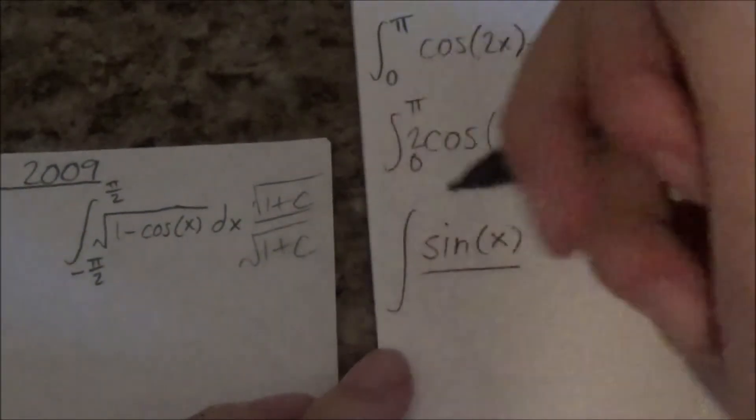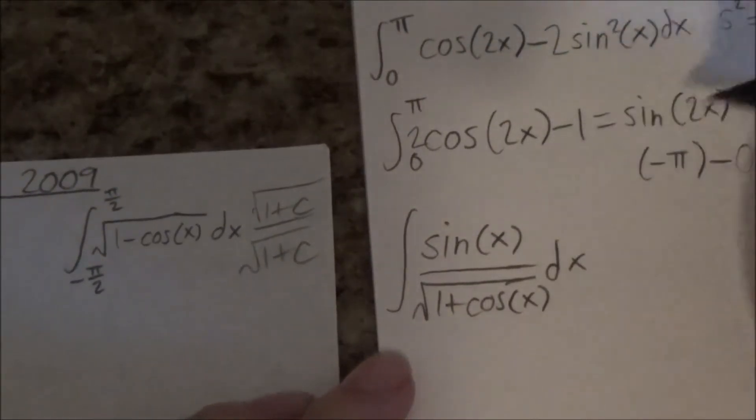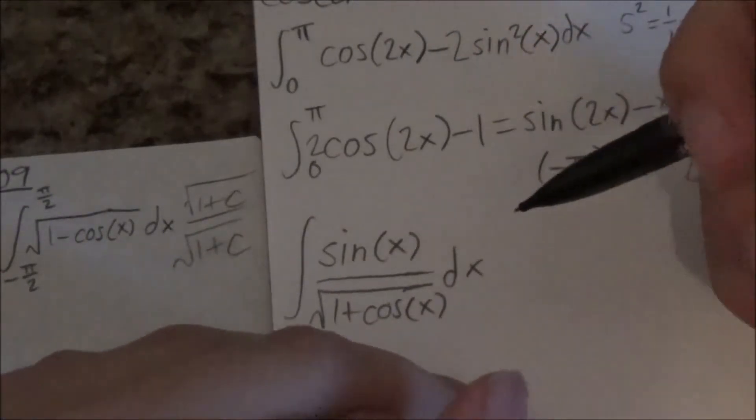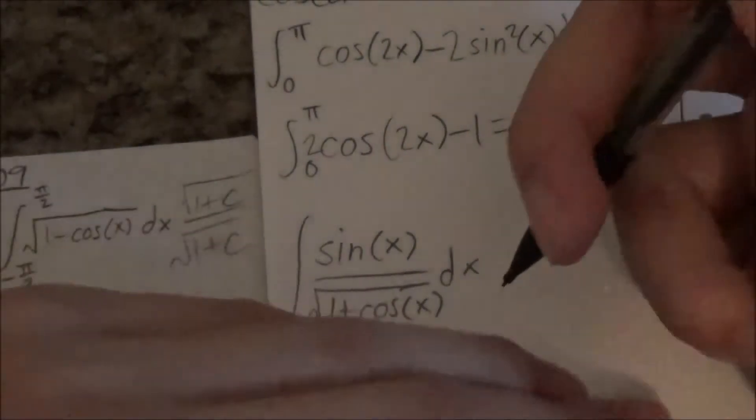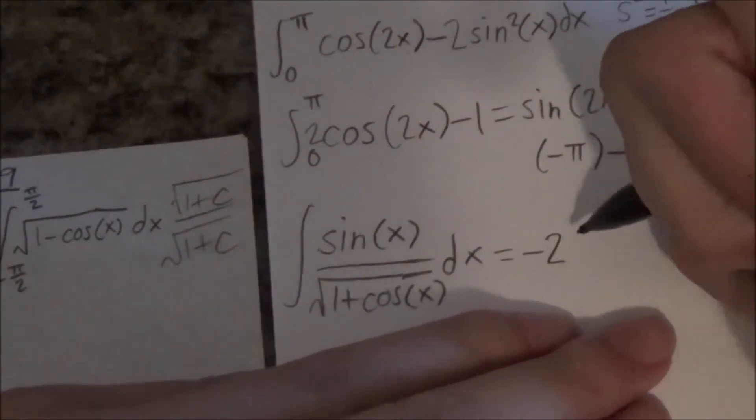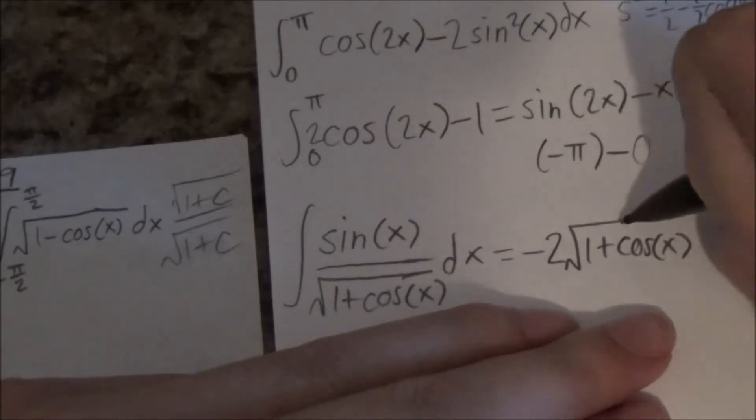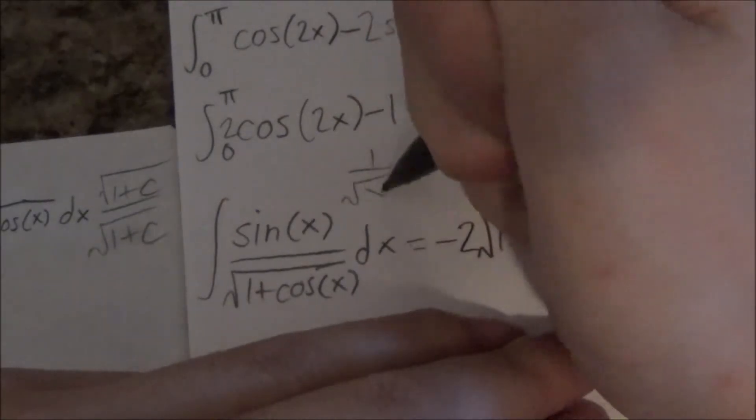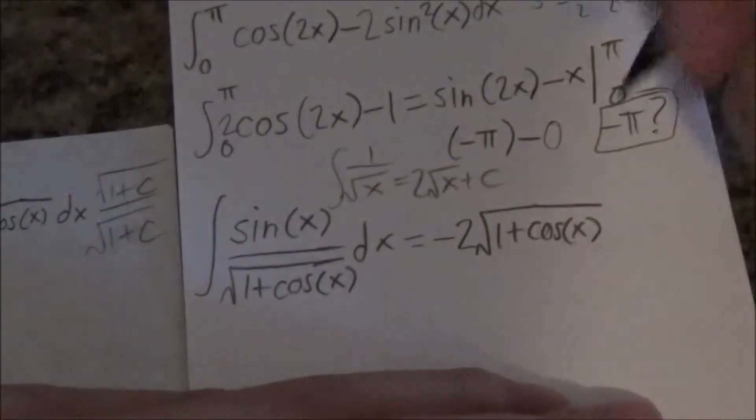Here the bottom is 1 plus cosine x. Oh dear god this is gonna be annoying cause I'm gonna have a negative. So if you do u sub, let u equals 1 plus cosine x, you'll end up with negative 1 over root u. So that's gonna equal negative 2 root u. Like that. If you memorize your... This is always equal to 2 root of x plus c, a very common thing to remember.